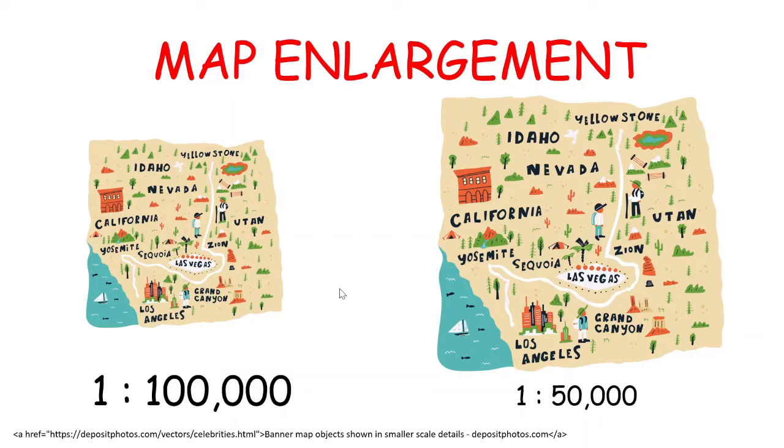For now, just ignore the numbers, we're going to focus on that later. As we can see, the map was 1 ratio 100,000. But as we increased the size of the map, the scale reduced to 1 ratio 50,000.